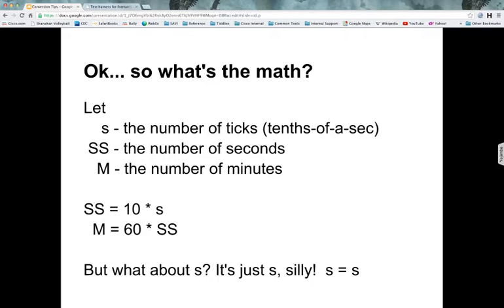So let's let, again, small letter s be the number of ticks, SS with the capitals is the number of seconds and M is the number of minutes. So with the number of facts that we had in the previous slide, we have seconds is 10 of the tenths of a second, right? SS equals 10 times small s and M equals 60 times SS.